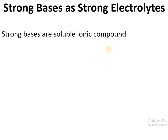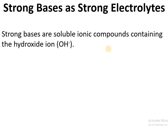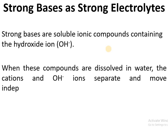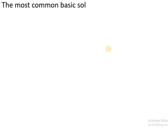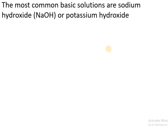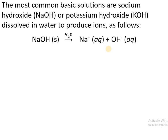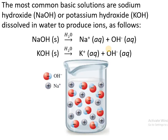Strong bases as strong electrolytes: strong bases are soluble ionic compounds containing hydroxide ions. When these compounds are dissolved in water, the cations and hydroxide ions separate and move independently. The most common basic solutions are sodium hydroxide and potassium hydroxide. NaOH dissolved in water produces Na⁺ and OH⁻ ions, and KOH produces K⁺ and OH⁻ ions.